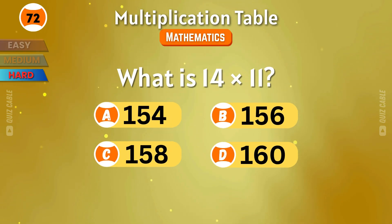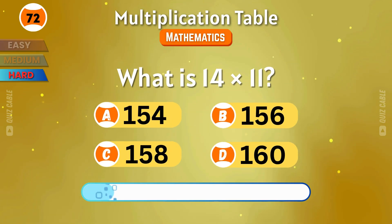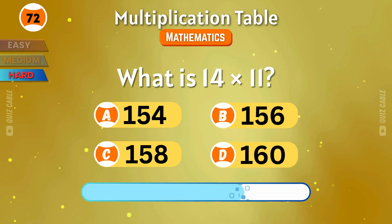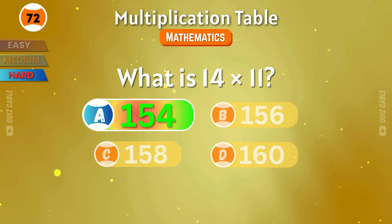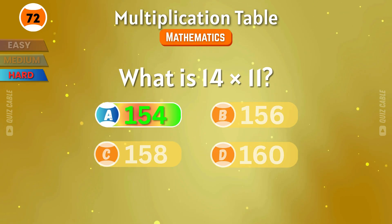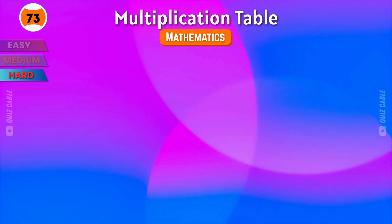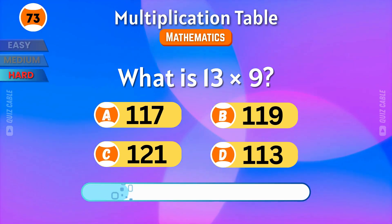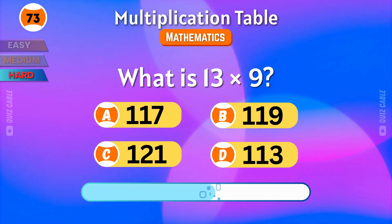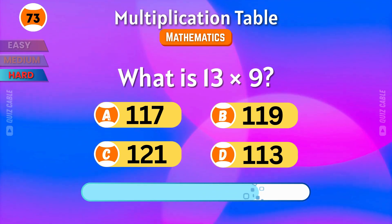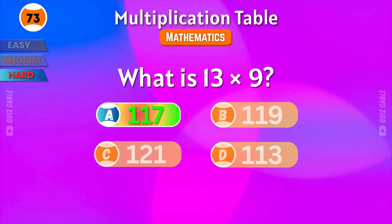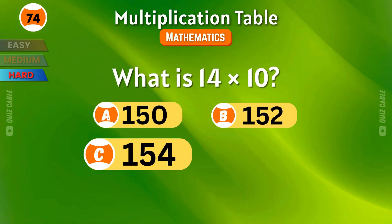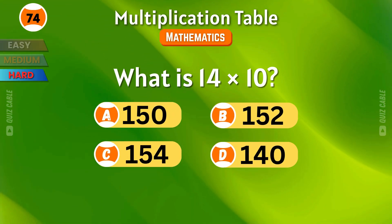What is 14 times 11? The answer is 154. What is 13 times 9? That makes 117.